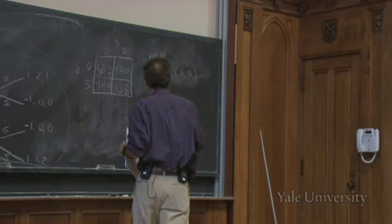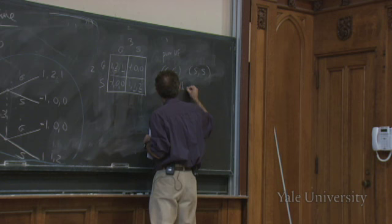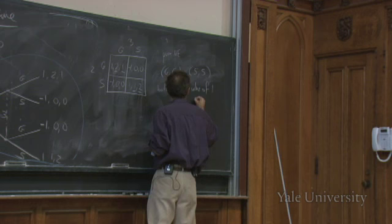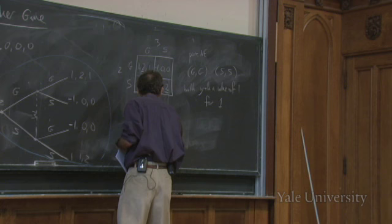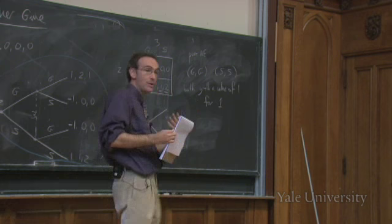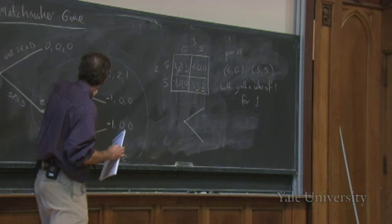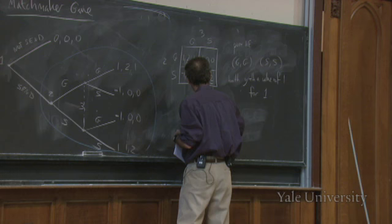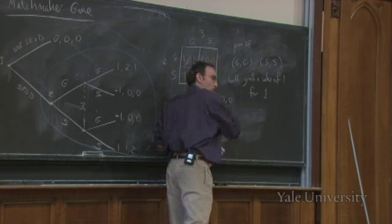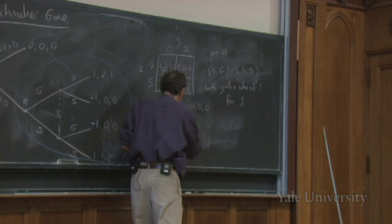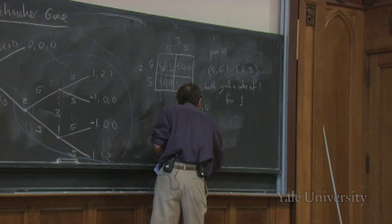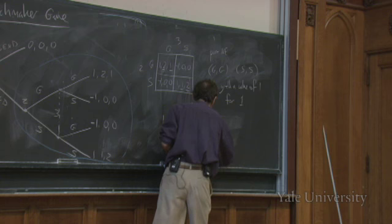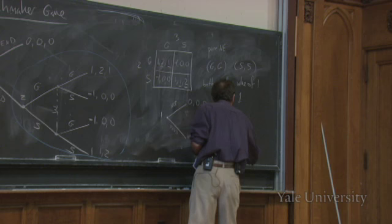Both pure Nash equilibria yield a value of one for Jake. Rolling the game back: if Jake chooses not to send them, he gets zero. If Jake sends them, they'll play a Nash equilibrium in the sub-game yielding Jake a value of one. So Jake will choose to send. The sub-game perfect equilibria are: send-Spence-Spence and send-Gaddis-Gaddis.